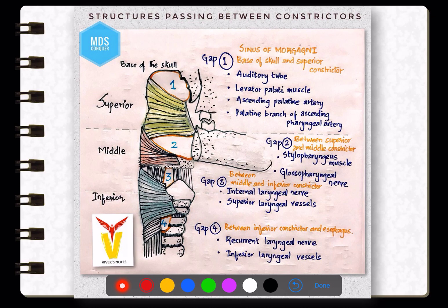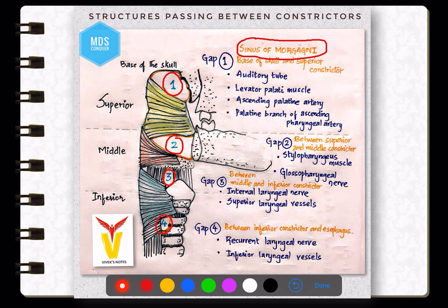The structures passing between the constrictors of the pharynx are also important. There are four gaps: Gap 1 is between the base of the skull and the superior constrictor, also called the sinus of Morgagni. Gap 2 is between the superior and middle constrictor. Gap 3 is between the middle and inferior constrictor. Gap 4 is between the inferior constrictor and the esophagus. The middle constrictor is considered to be fan-shaped among the muscles of the pharynx.